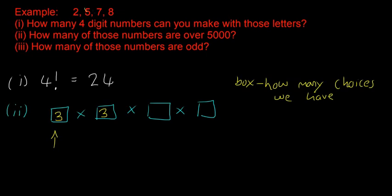Say the 5 went in the first box — then we can choose 7, 2, or 8 for the next. So there are always 3 choices left for that second box. Then there are 2 left for the third box, and 1 for the final box. So we multiply 3 × 3 × 2 × 1, which gives us 18 — so 18 of those numbers are over 5000.